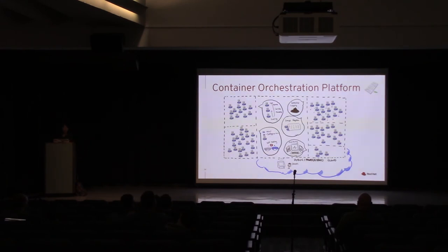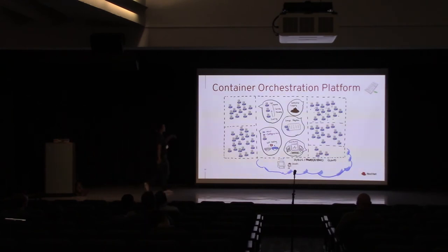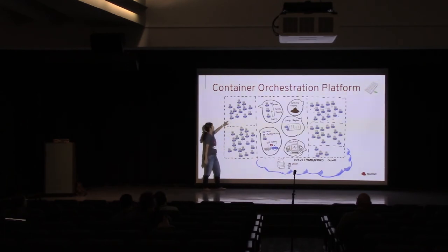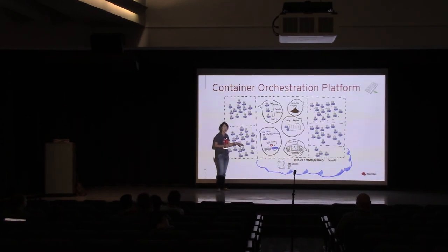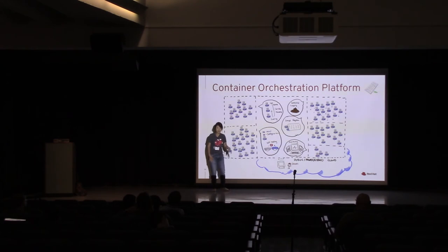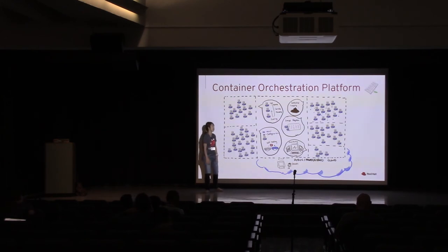Kubernetes and OpenShift help you rein in your containers so your microservices don't go everywhere. You can do load balancing, service discovery — so if anybody wants a particular microservice, Kubernetes or OpenShift tells them where to find it. It helps with discovery and load balancing because you can create and scale your microservices and it does all the load balancing for you. The biggest problem with all these containers and microservices is config — I have config for production, testing, UAT — they all have different configurations and different secrets and passwords.